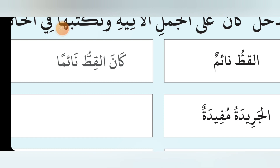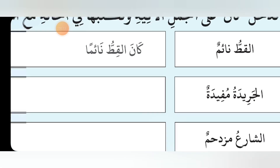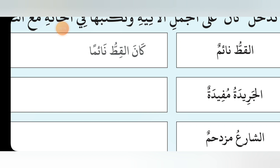One example given is Al-Qittu Naiman, which we make into Kana Al-Qittu Naiman. Now for Al-Jariidhatu Mufidhatun, there is a difference — Jariidhat and Mufidhat are female because there is a Ta Marbuta. So we have to use Kanat instead of Kana, because Kana is used for male and Kanat is used for female. So we say Kanat Al-Jariidhatu Mufidatan — Jariidhatu in nominative case and Mufidatan in accusative case.